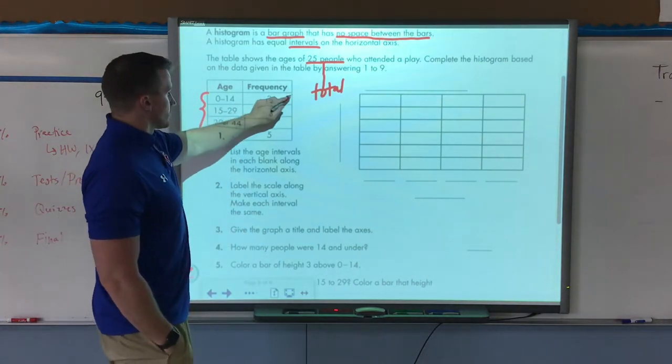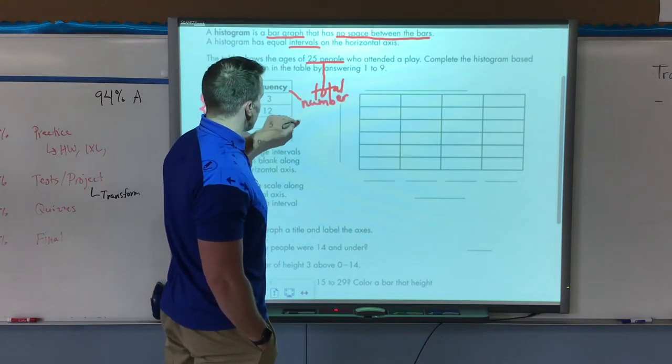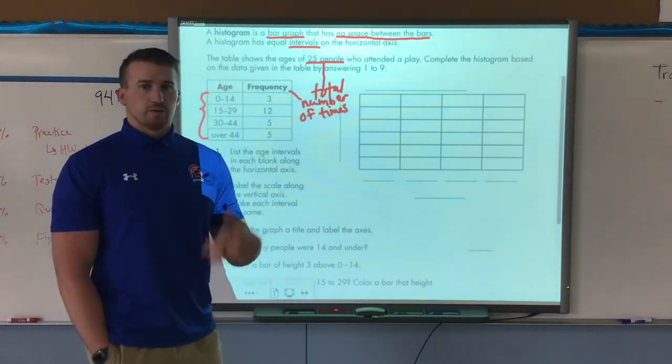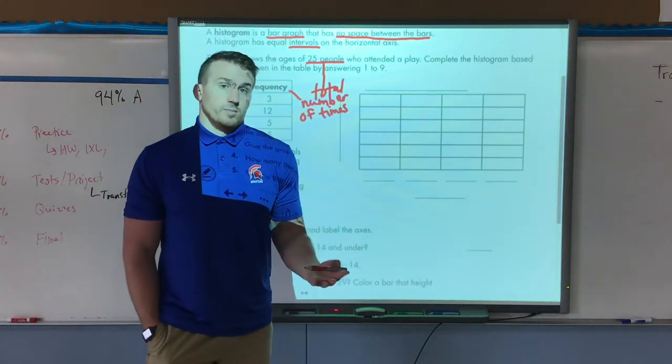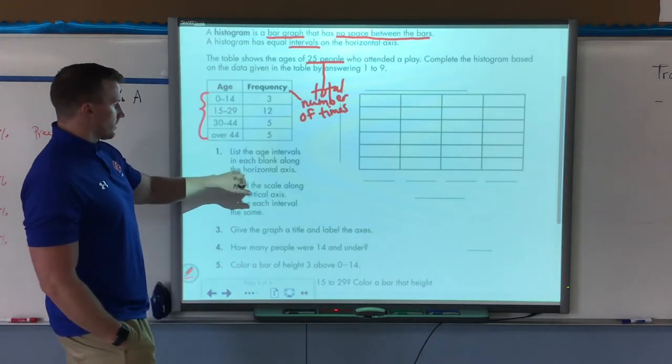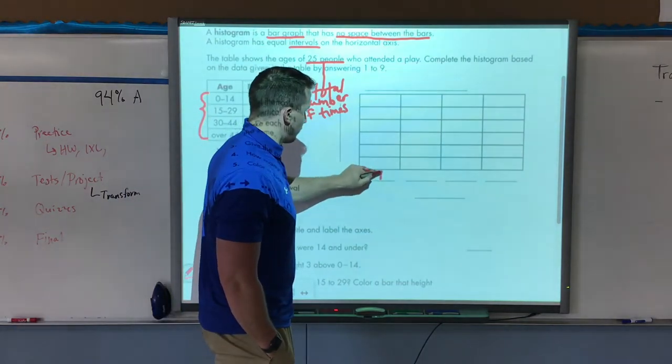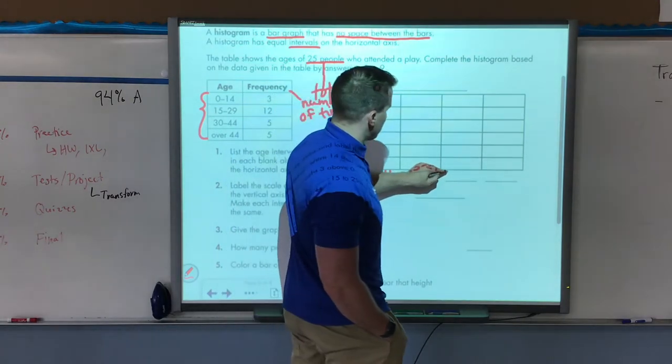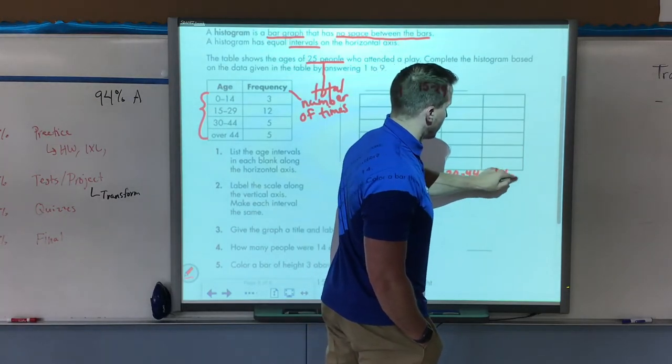The frequency is how often, the number of times that it took place. Frequency means how many times. So if I say I'm going to the bathroom four times a day, that's frequent because it's multiple times. First step: list the age intervals in each blank along the horizontal axis. So down here I put my intervals: 0 to 14, 15 to 29, 30 to 44, and then 44 and up.